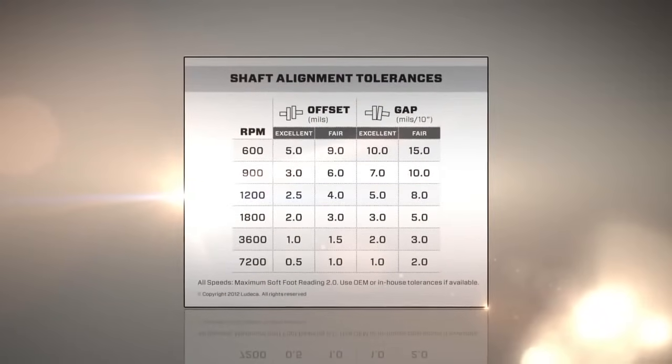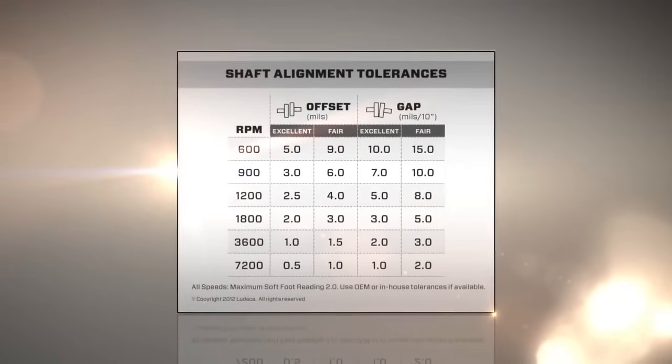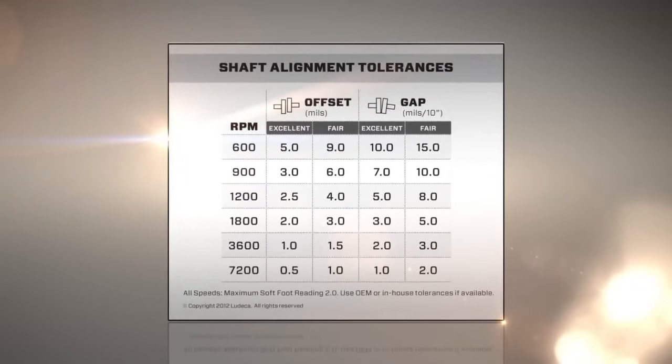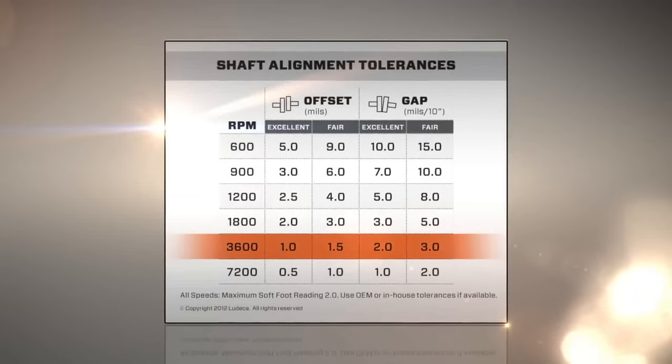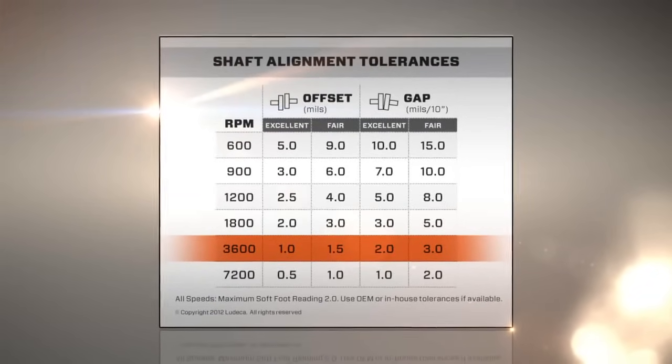Because alignment is so important, tolerances were developed to define the most misalignment you can have and still be okay. We will explain about these tolerances in a future video. If this was a 3600 RPM motor, these would be the tolerances.